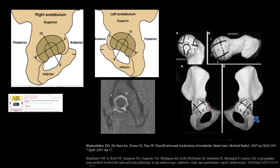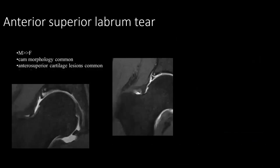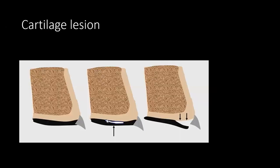Here's an example of a labral tear in the anterior aspect. Another example of the anterior superior labrum: this is the cartilage, this is the acetabulum, this is the labrum, and this is an almost complete tear of the labrum — anterior superior, normally associated with CAM type of FAI. This is the ligamentum teres and this is the labral tear. Here the labral tear is in the anterior aspect, normally associated with pincer FAI. And most of the time there is also cartilage pathology — we call it cartilage delamination, with fissure and cartilage tear injury.